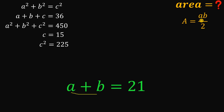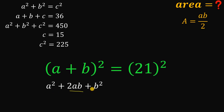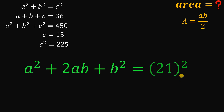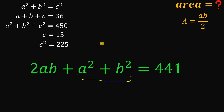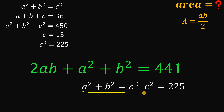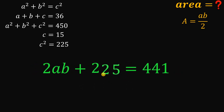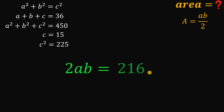We don't want the sum of A and B — we want the product. To find the product of A and B, we square both sides of A plus B equals 21. Squaring gives A squared plus 2AB plus B squared equals 441. We know from the Pythagorean theorem that A squared plus B squared equals C squared equals 225, so substituting gives 225 plus 2AB equals 441. Subtracting 225 from both sides gives 2AB equals 216.